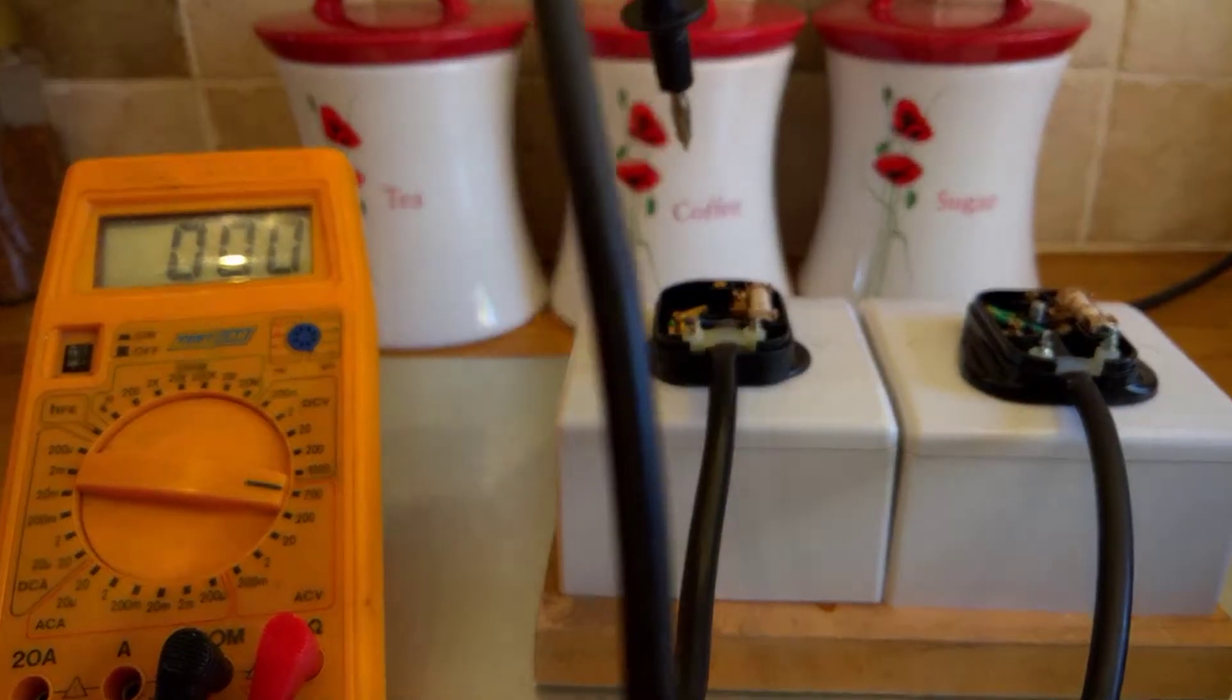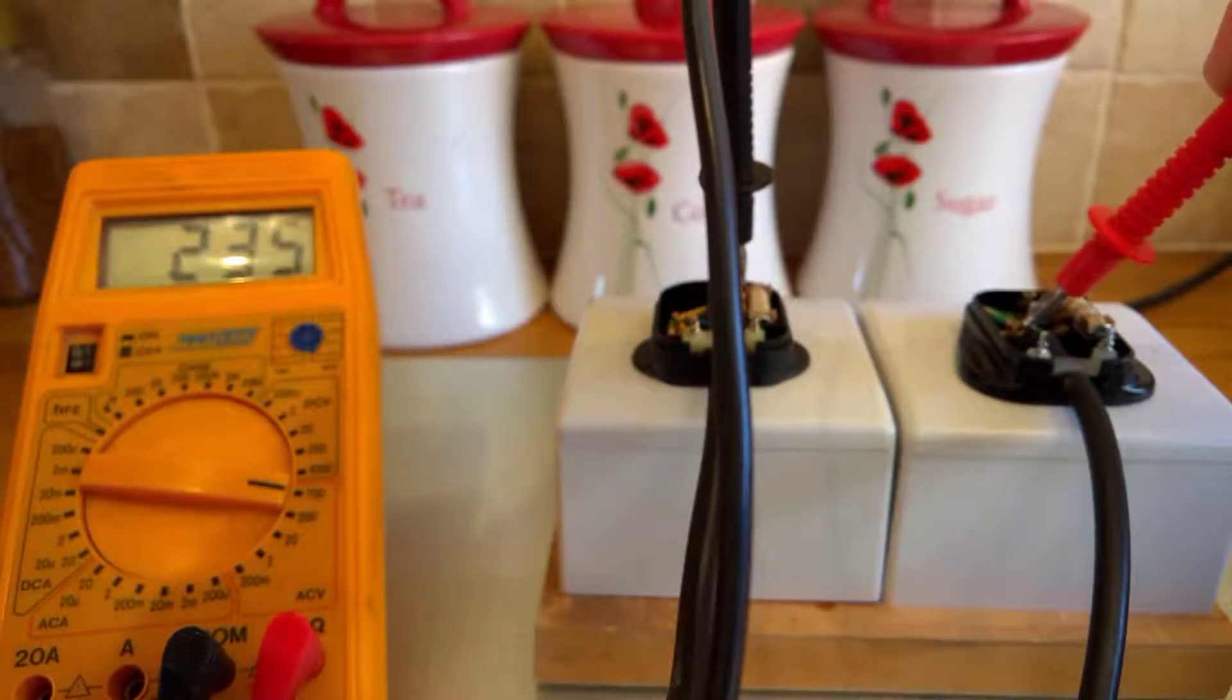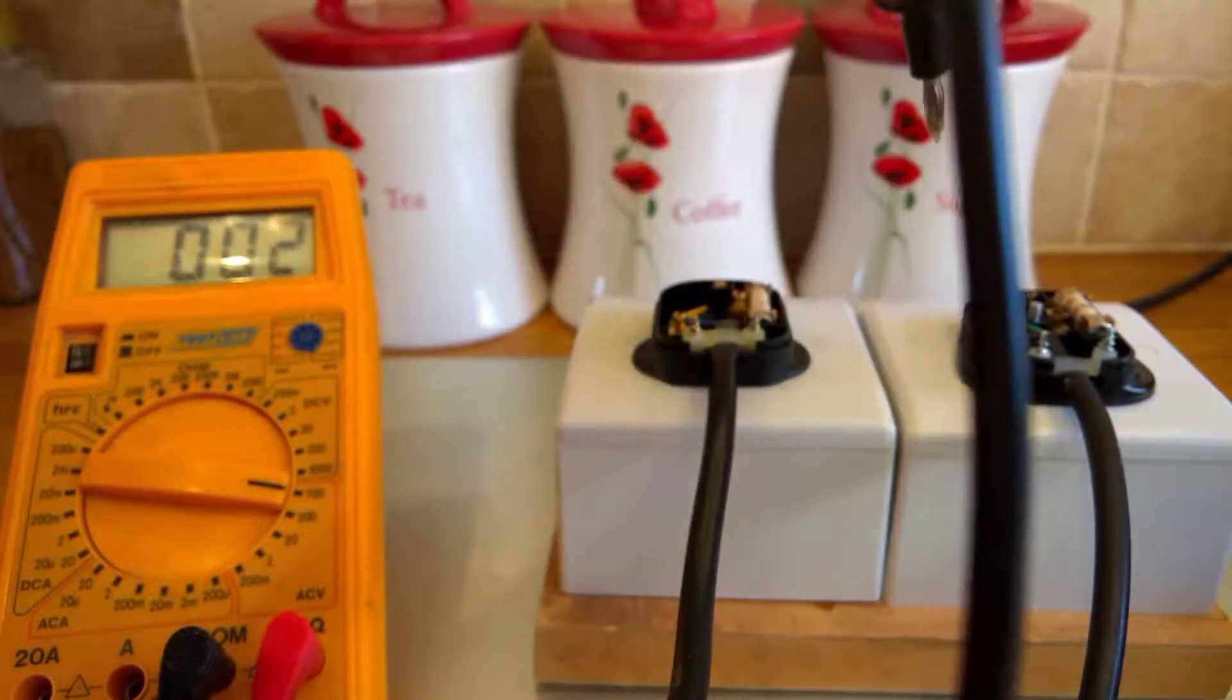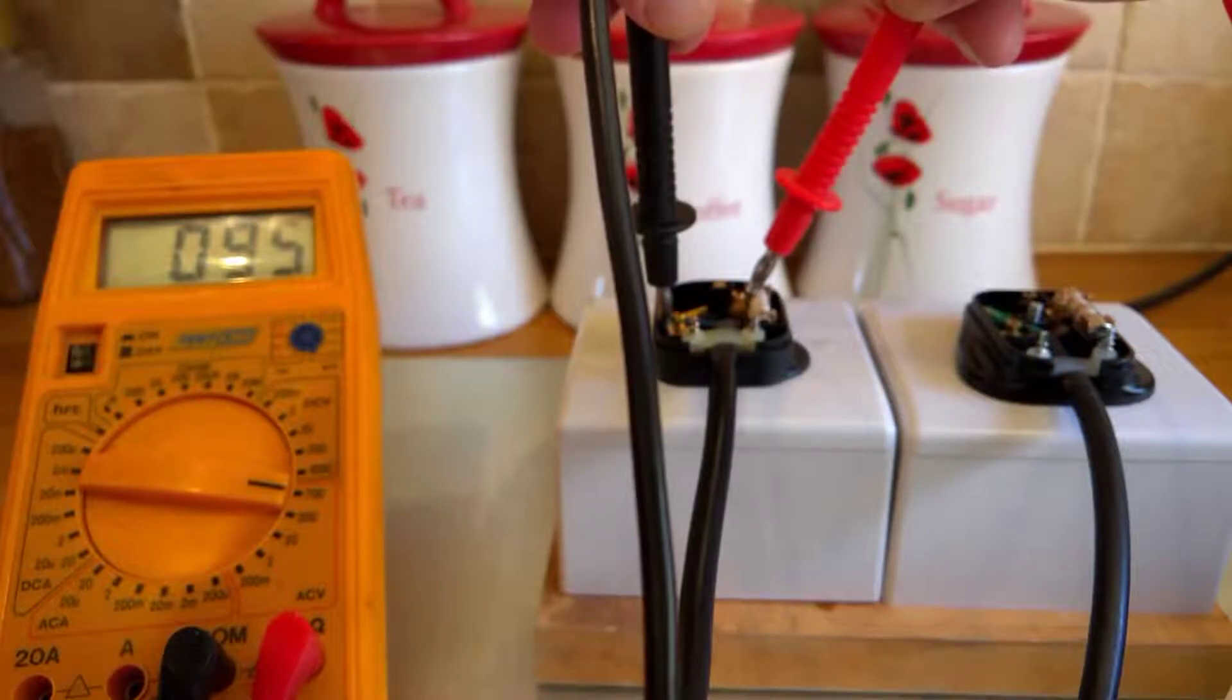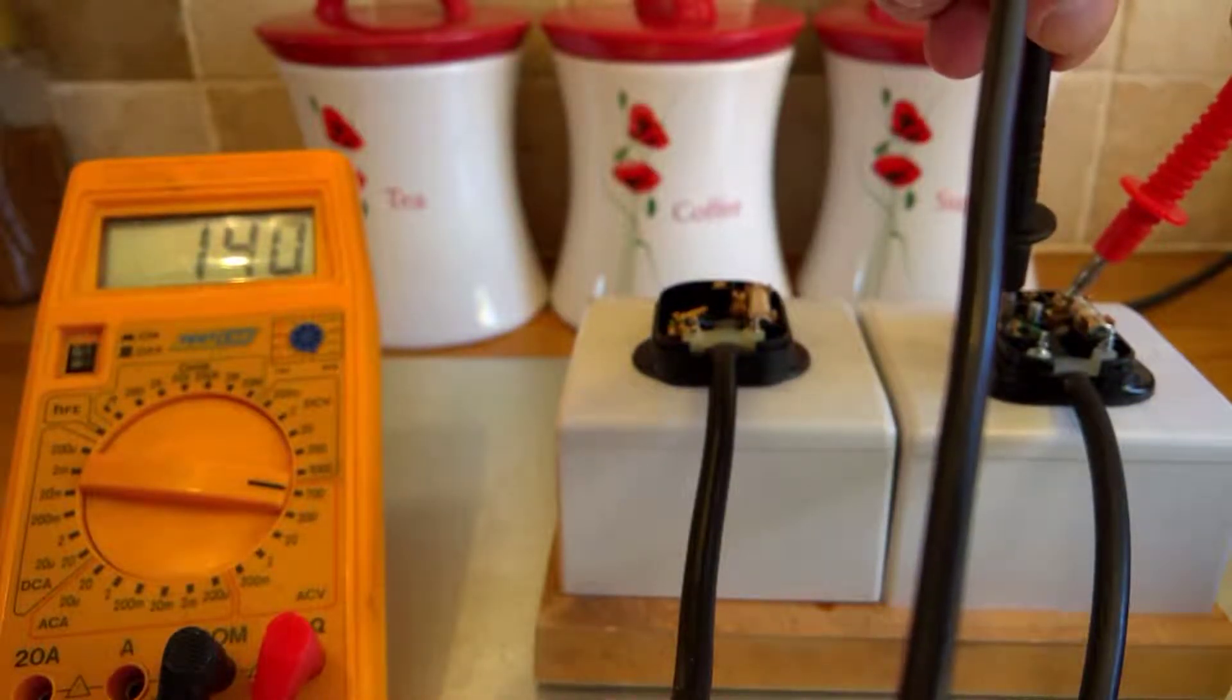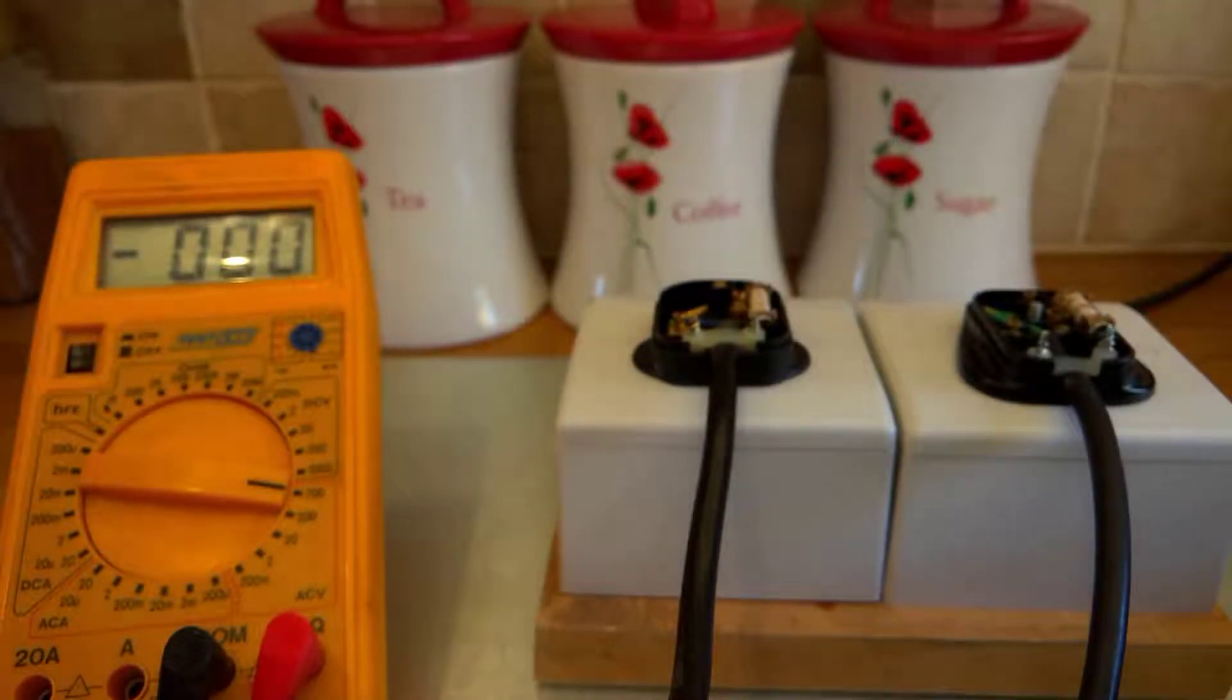So between live and neutral, we have 235 volts, pretty standard for a nice day. Across the kettle, we have 95 volts, and across the Panini Grill, 140 volts. So we've reduced from 235 to 140. Great!